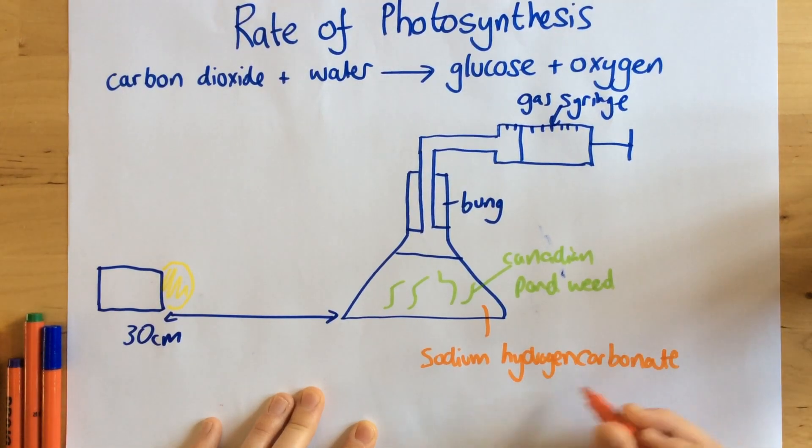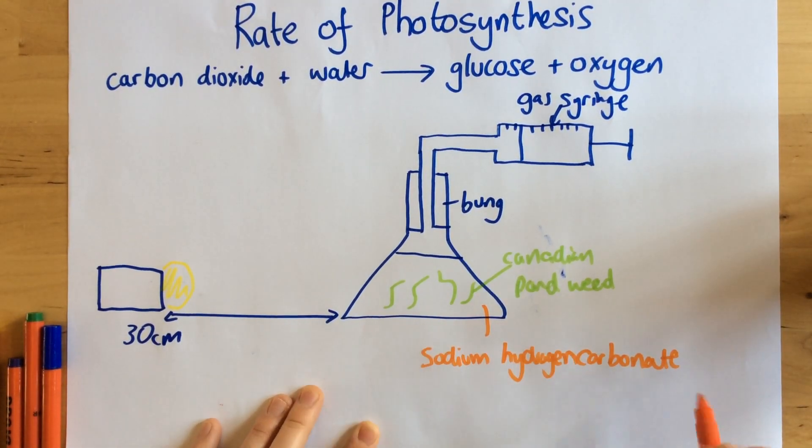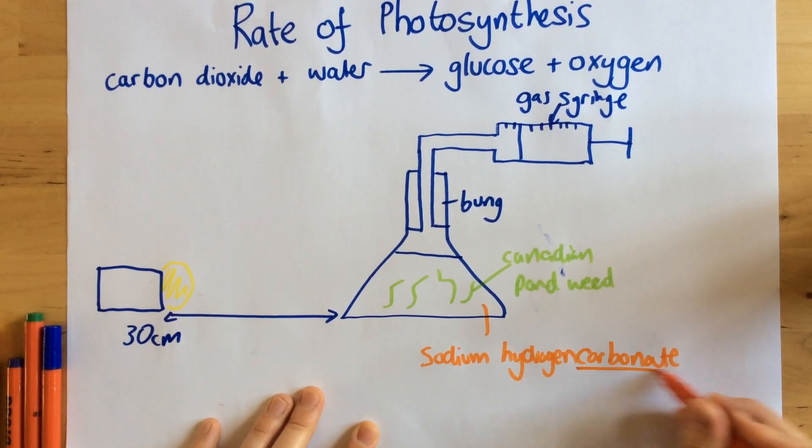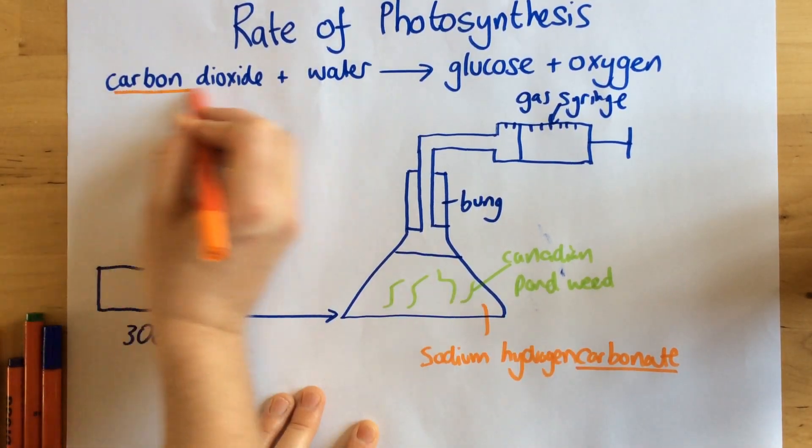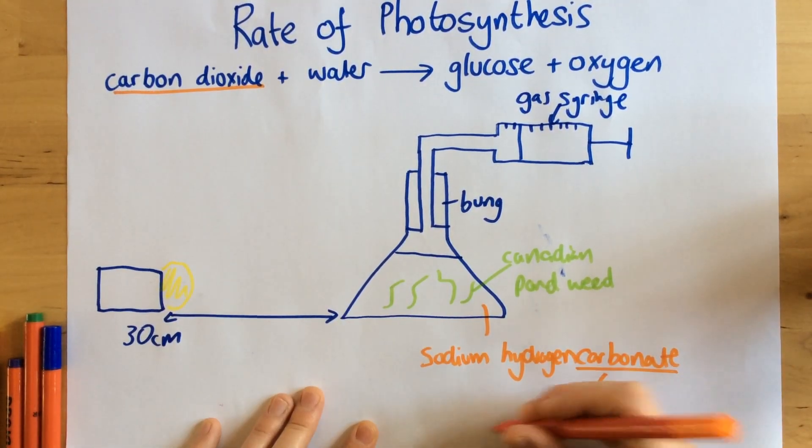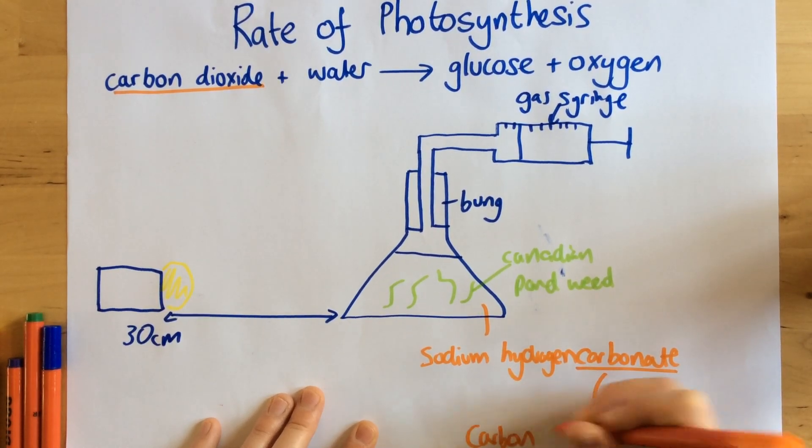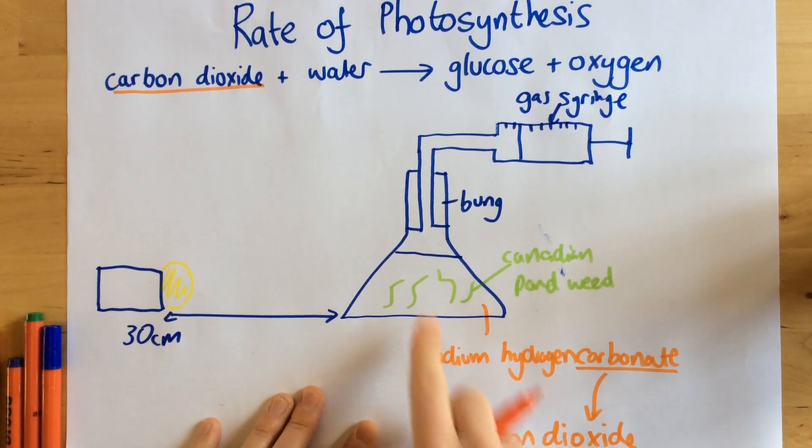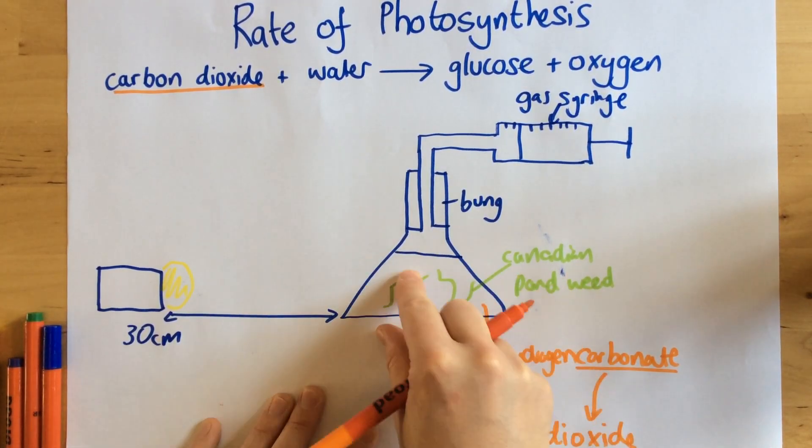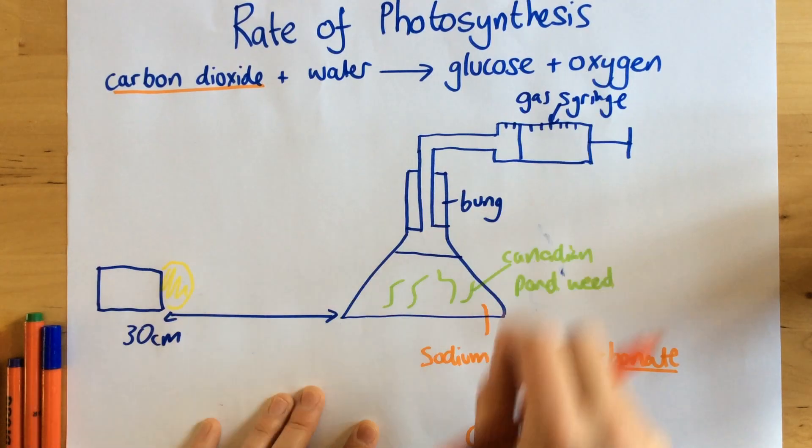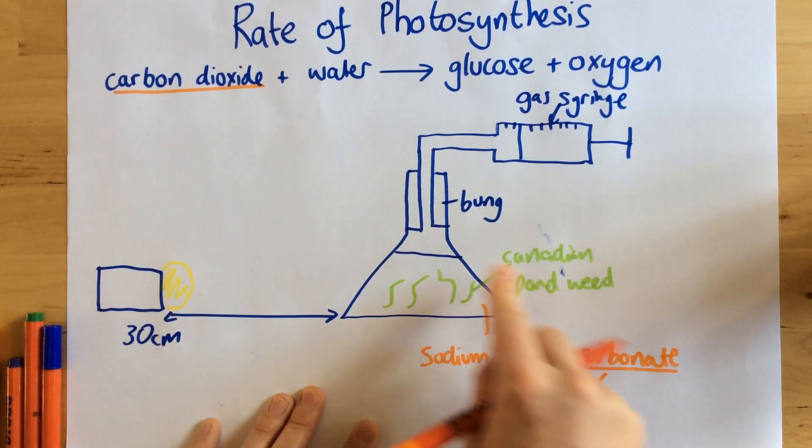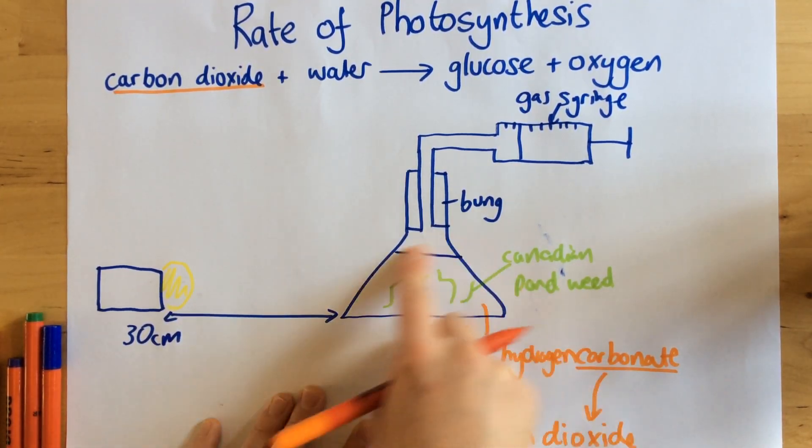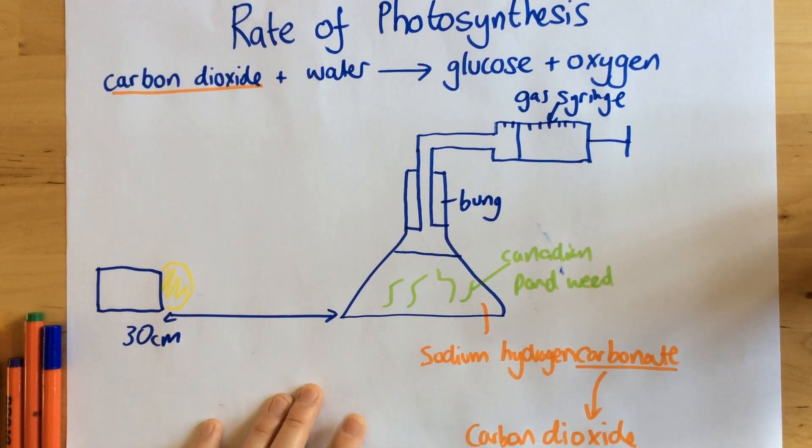Now the reason why we've got this particular thing in the water is it releases carbon dioxide into the solution, into the water. So we want carbon dioxide to be released into this water because the pondweed needs carbon dioxide in order to photosynthesize. So by having this in here, it gives carbon dioxide for photosynthesis to be able to happen.